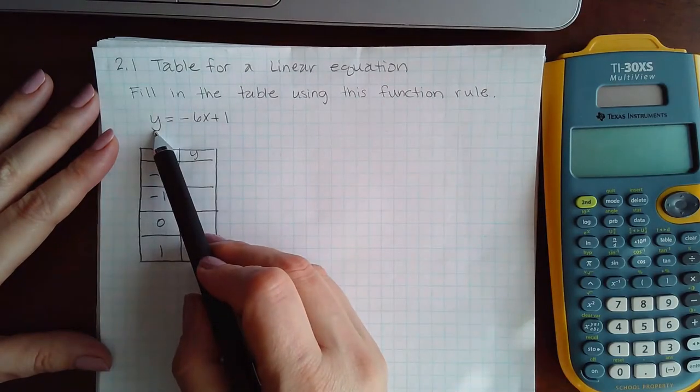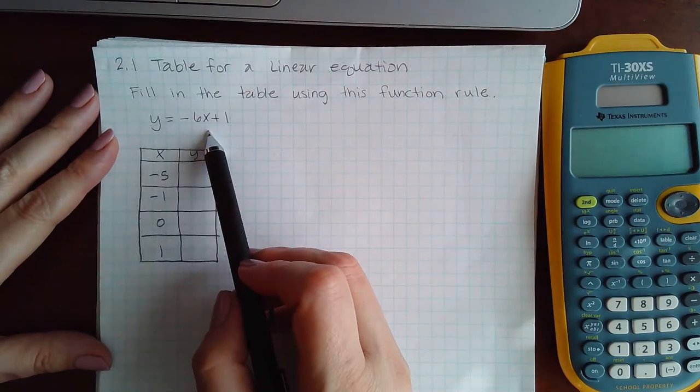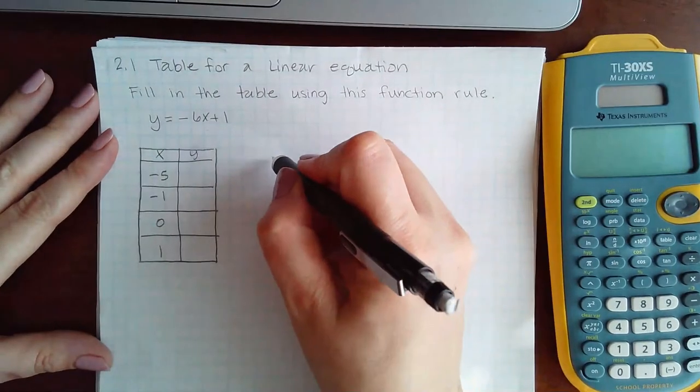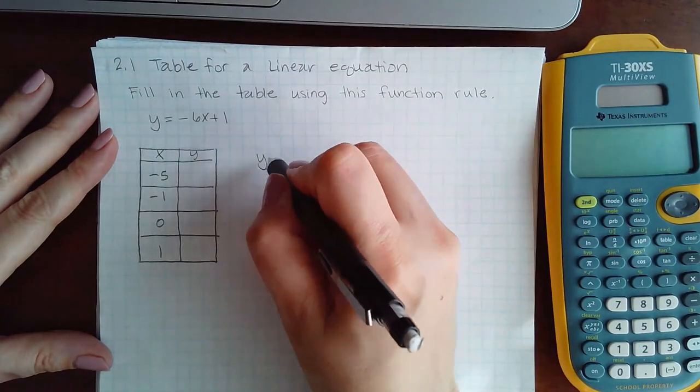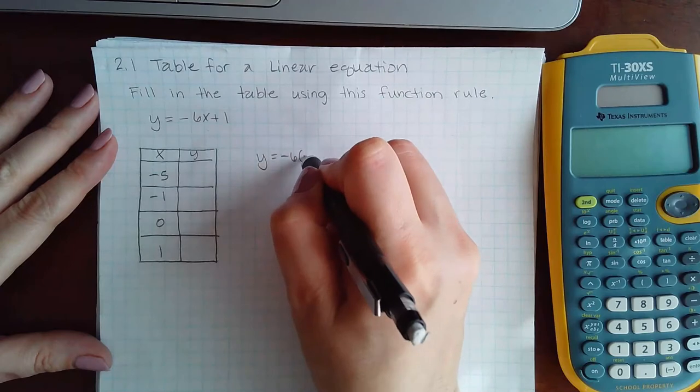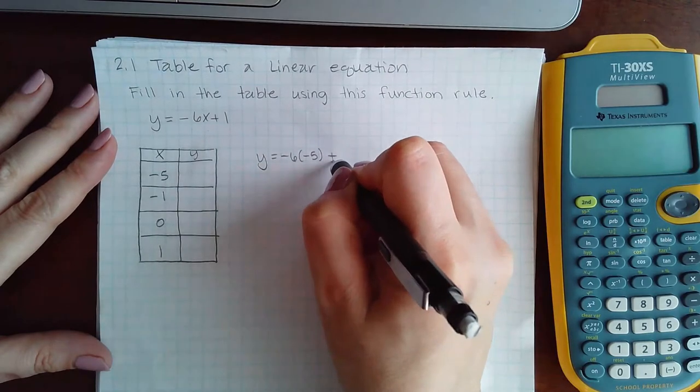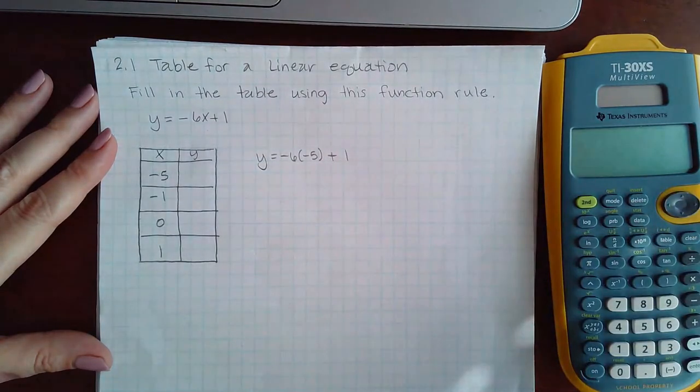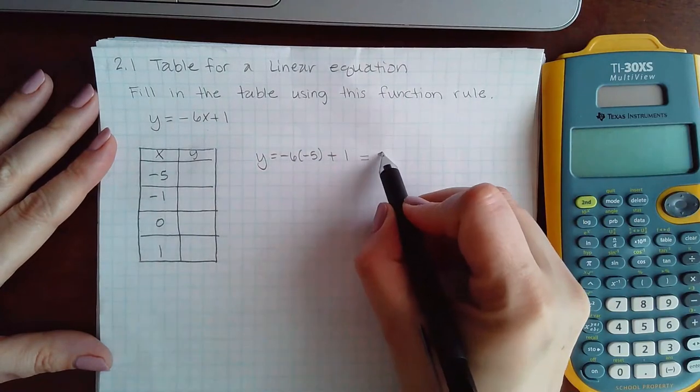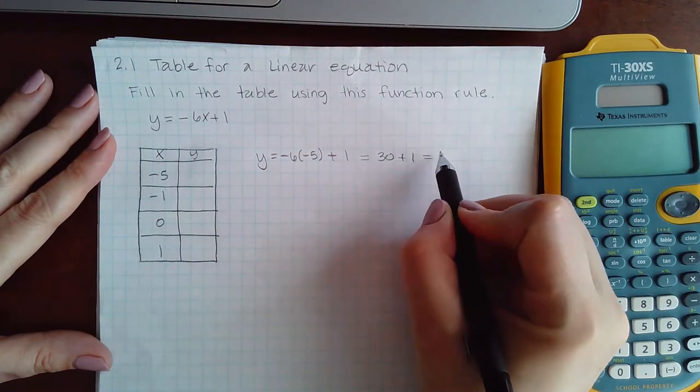Since we have an expression for y in terms of x, we can just plug in our x values. So y equals negative 6 times negative 5 plus 1. Since that is my first x value, I get positive 30 plus 1, which is 31.